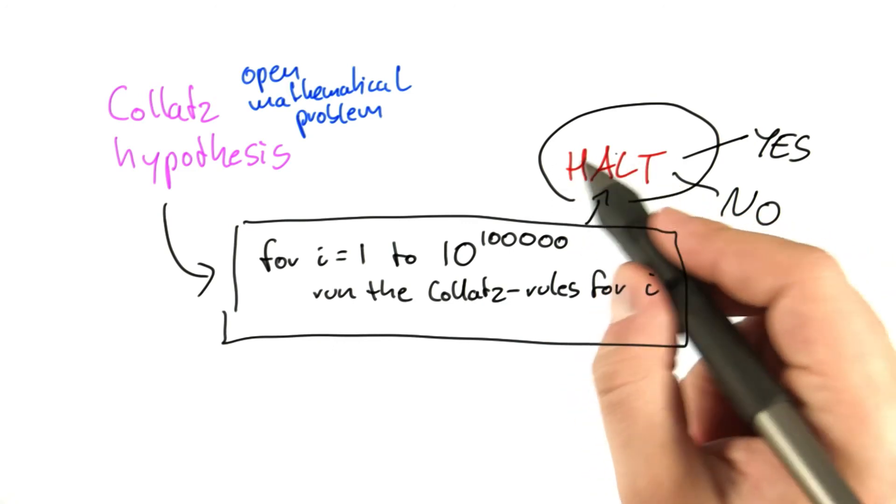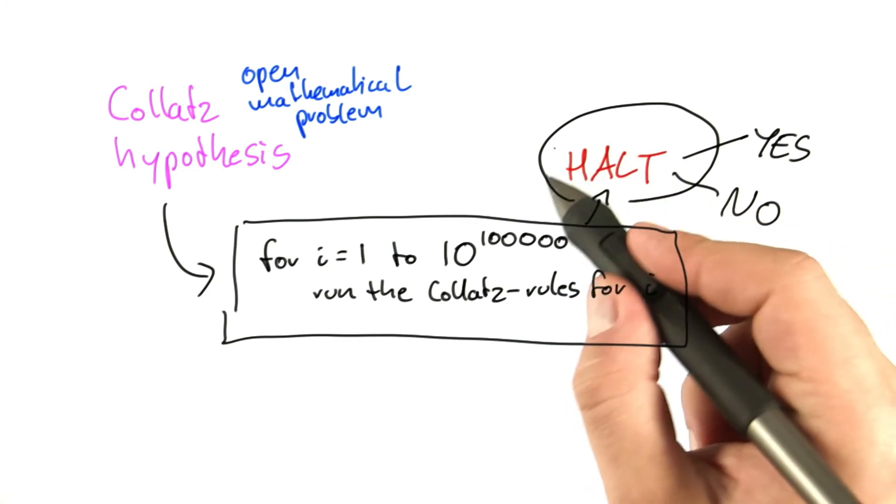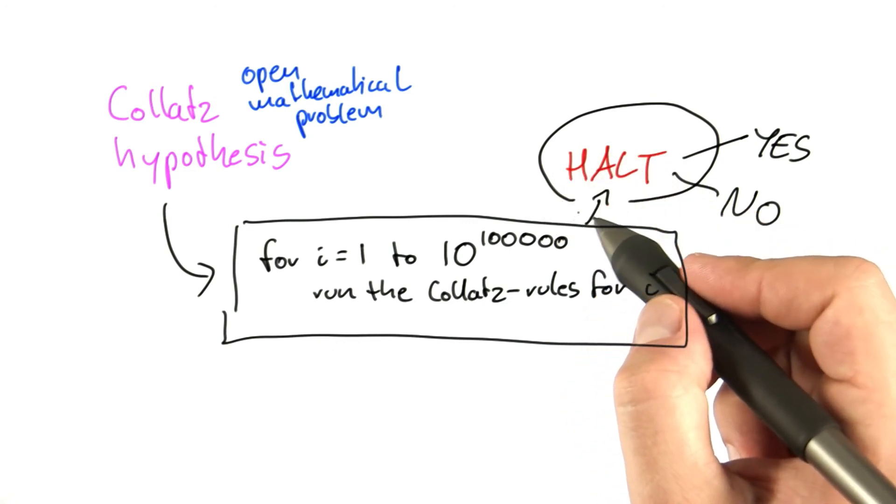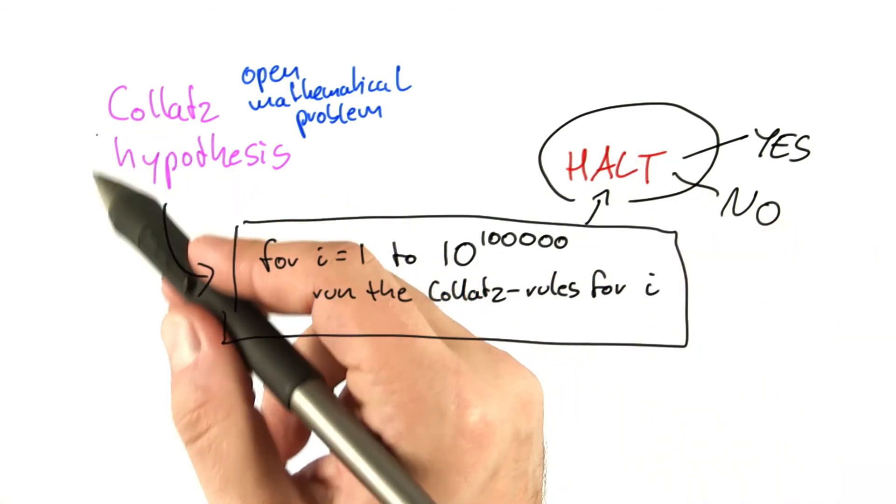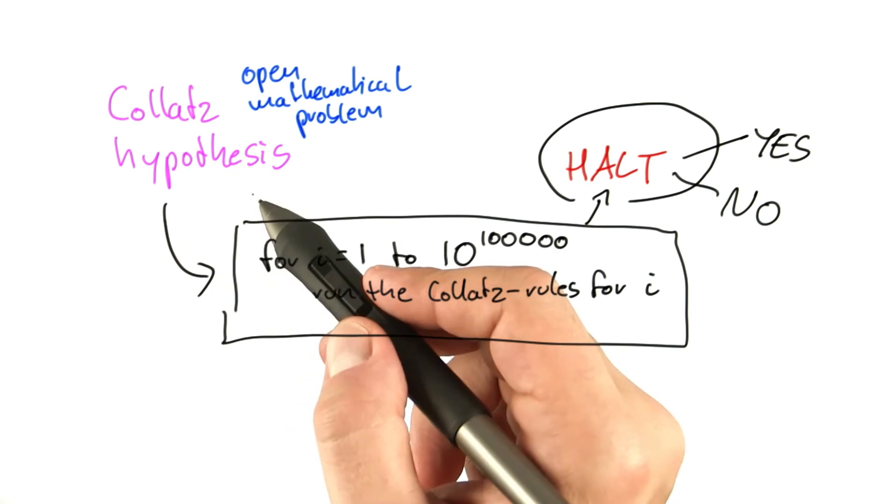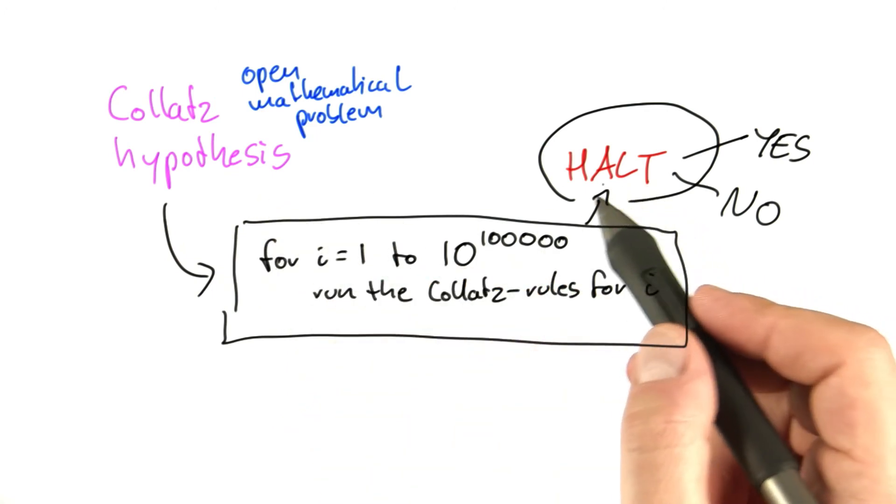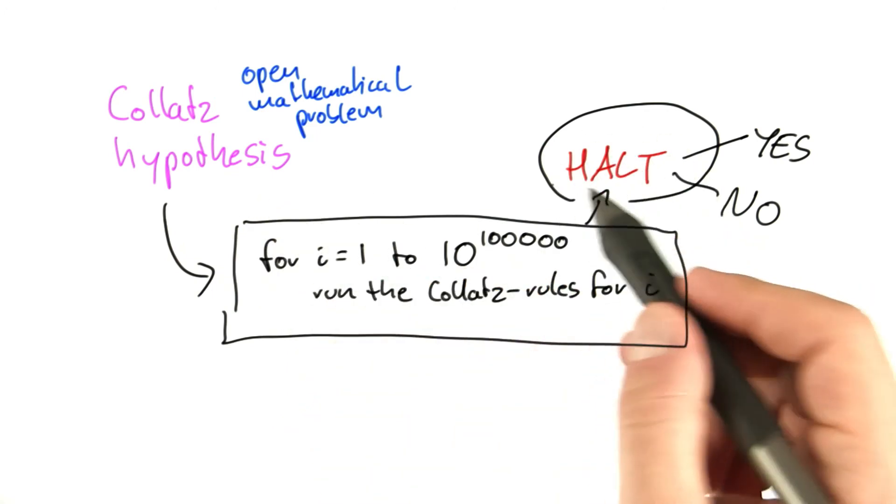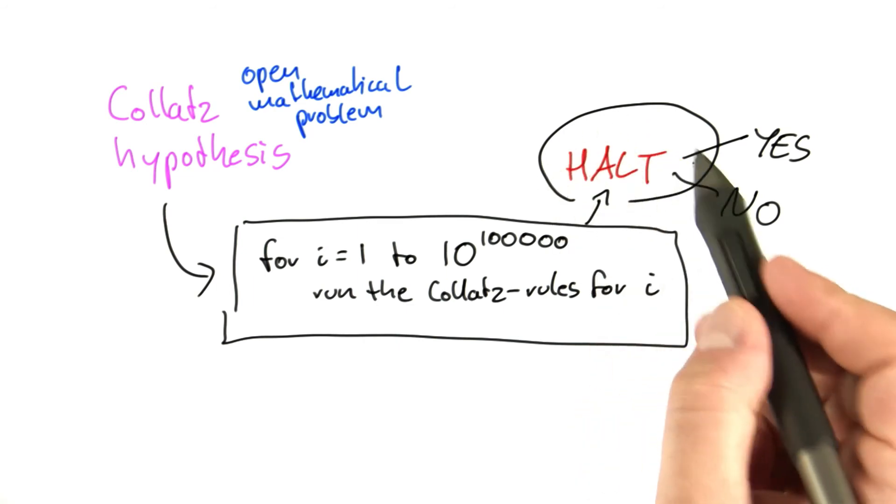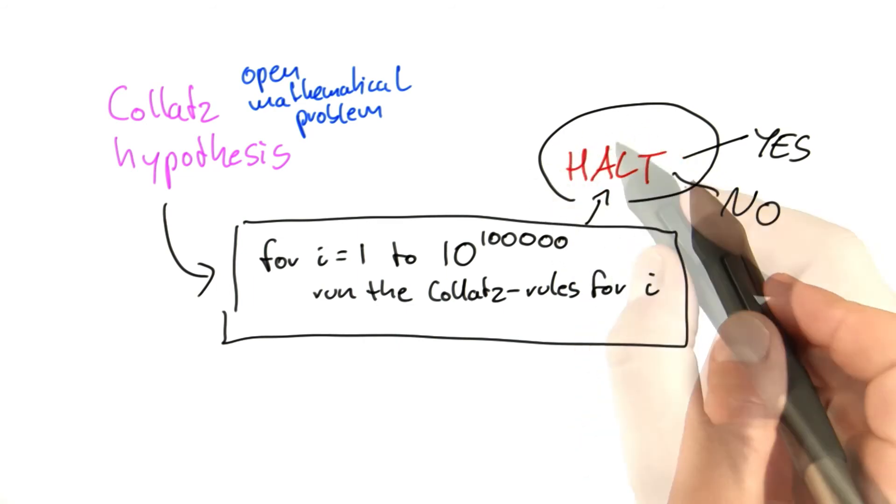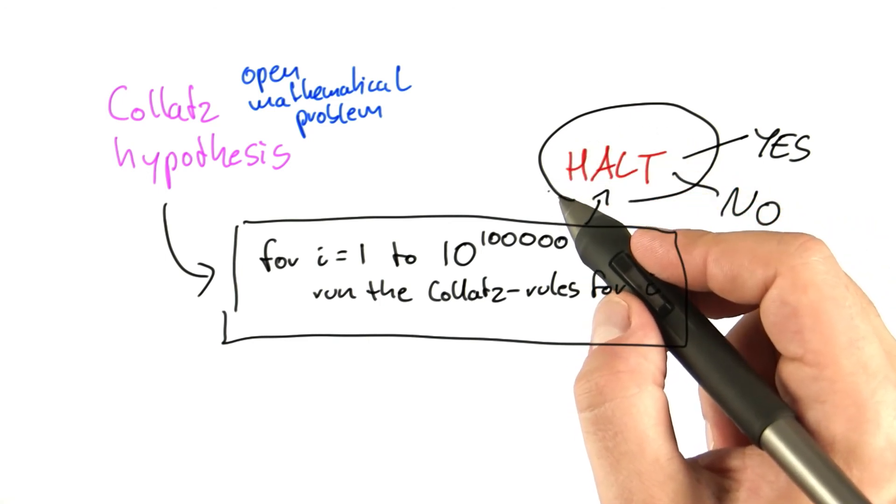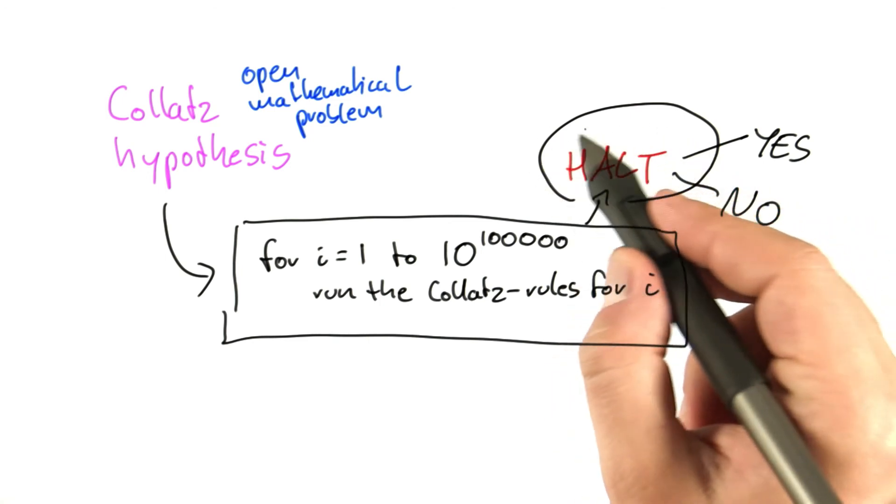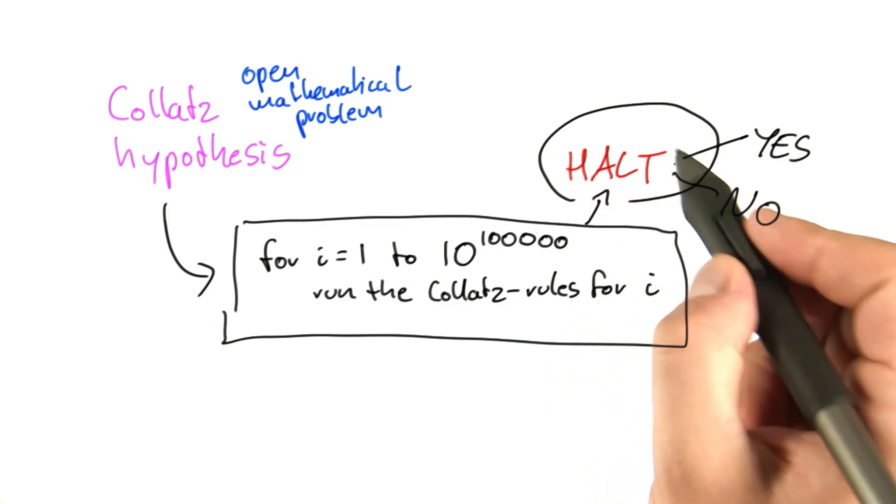An algorithm that would be able to solve the halting problem would actually be able to solve almost any open mathematical problem there is out there. Any mathematical problem that can be formulated as an algorithm could be decided by an algorithm that solves the halting problem. So this would almost be a kind of omniscient algorithm, which also provides an intuition why this halting algorithm here cannot possibly exist. It would just simply be too powerful. It could answer almost any mathematical question that we can think of.